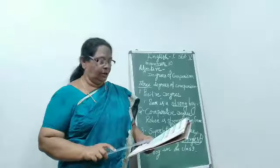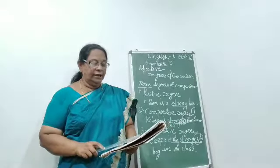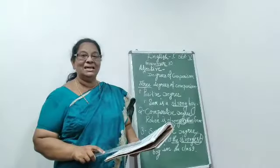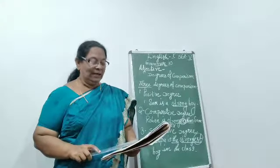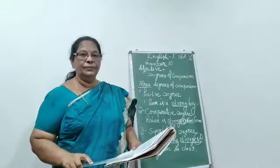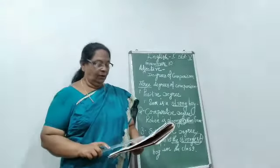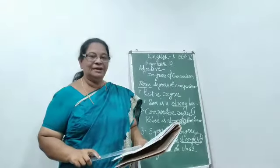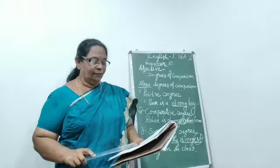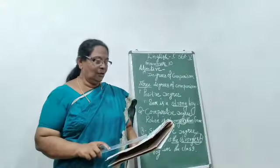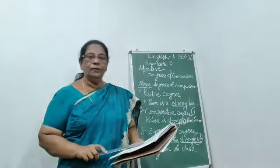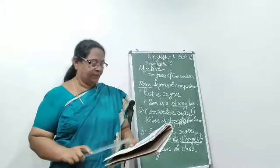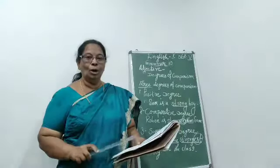There are many examples given in the textbook — go through and read them. See the difference: for 'good', we will never say 'gooder' and 'goodest'. Instead we say 'better' and 'best'. 'Old' — older or elder; oldest and eldest. 'Far' — farther or further; farthest and furthest. For 'bad', just like 'good', we won't say 'bader' and 'baddest'. Instead: worse, worst. 'Little': less, least. 'Many' and 'much': more, most.